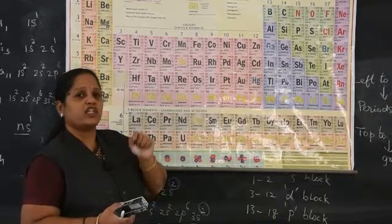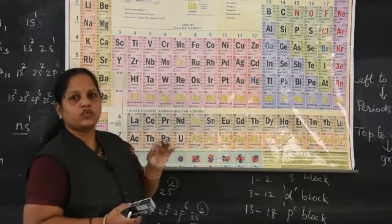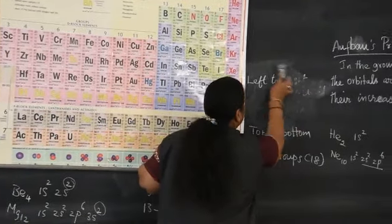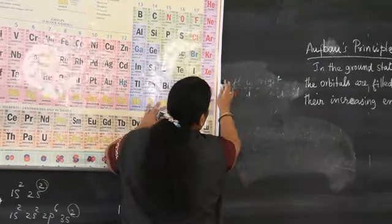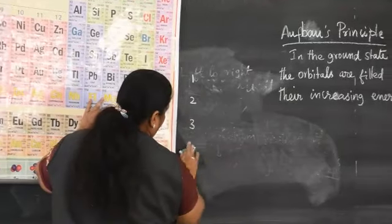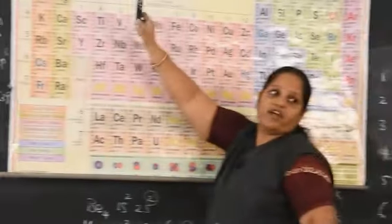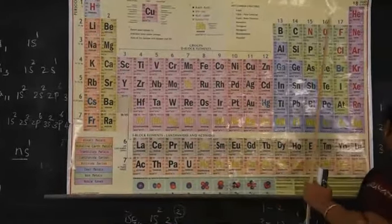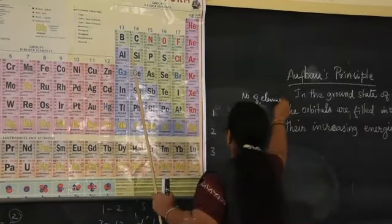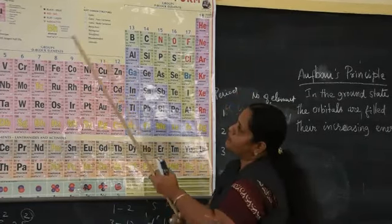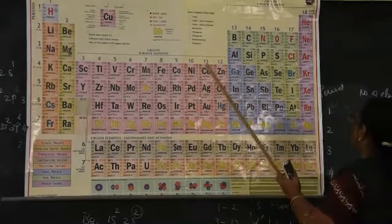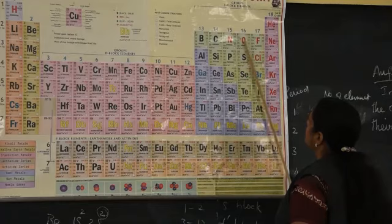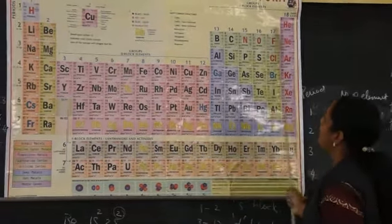In each period, how many elements are there? There are 7 periods total. In the first period, moving left to right, there are only 2 elements. In the second period there are 8 elements. The third period also has 8 elements.